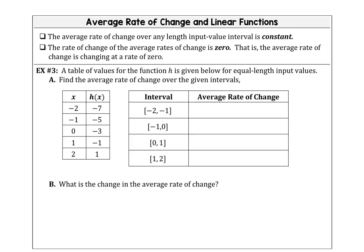In example three, we're going to use a table of values for function h, where the input values are equal-length intervals, and our job is to find the average rate of change over the given intervals. We want the average rate of change between x = negative 2 and x = negative 1, using the slope formula with the difference in y-values divided by the difference in x-values. The change in y is negative 5 minus negative 7, divided by the change in x, negative 1 minus negative 2. That gives us 2 divided by 1, so the average rate of change is 2.